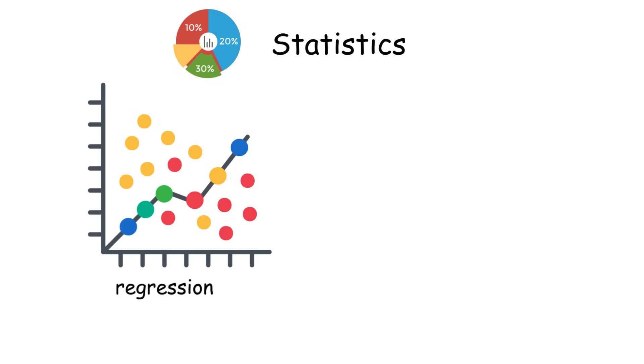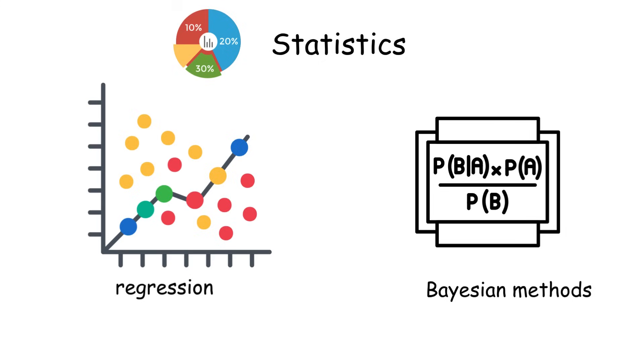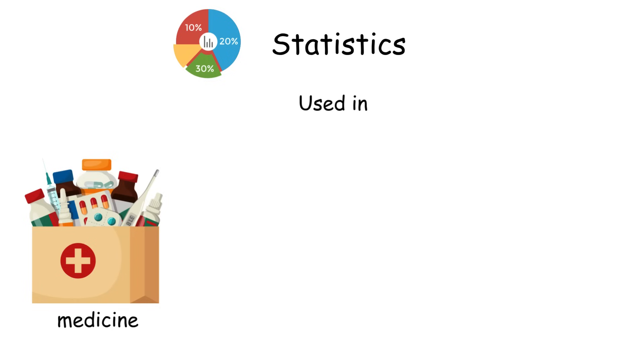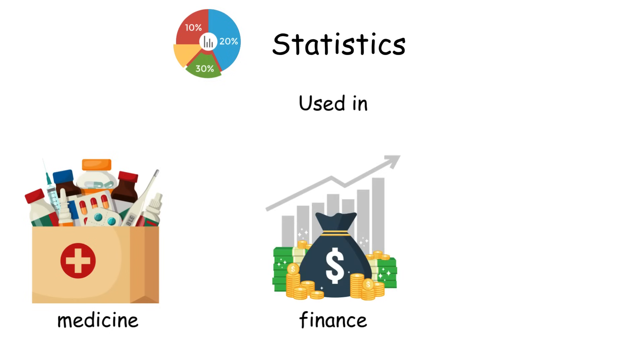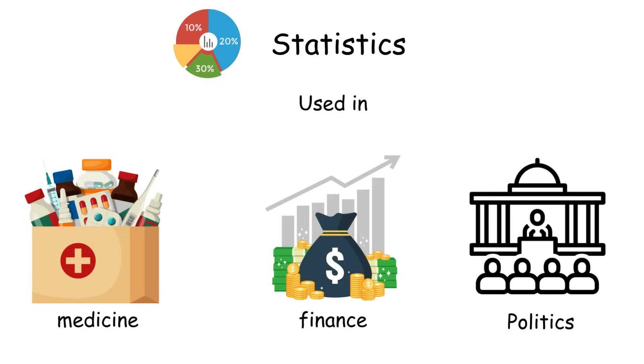Advanced techniques, like regression and Bayesian methods, model complex relationships, powering machine learning. These fields guide decisions in medicine, finance, and policy, turning raw data into actionable insights and shaping our understanding of an unpredictable world.